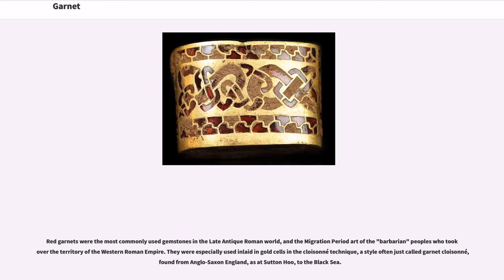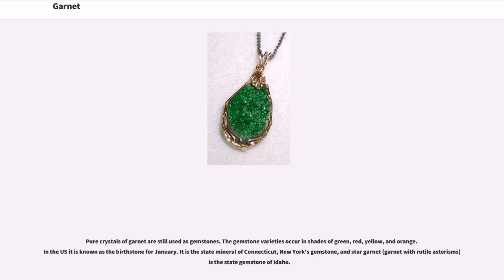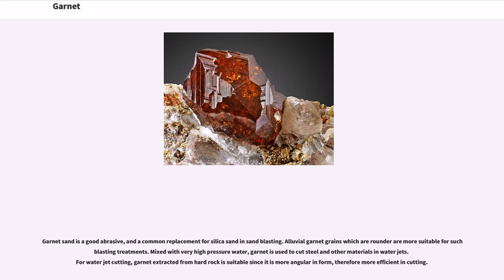Red garnets were the most commonly used gemstones in the late antique Roman world and in the migration period art of the barbarian peoples who took over the territory of the Western Roman Empire. They were especially used in gold cells in the cloisonné technique — a style often just called garnet cloisonné — found from Anglo-Saxon England, as at Sutton Hoo, to the Black Sea. Pure crystals of garnet are still used as gemstones. The gemstone varieties occur in shades of green, red, yellow, and orange. In the U.S. it is known as the birthstone for January, and it is the state mineral of Connecticut, New York's gemstone, and Idaho's state gemstone — star garnet with ruby luster — is also notable.